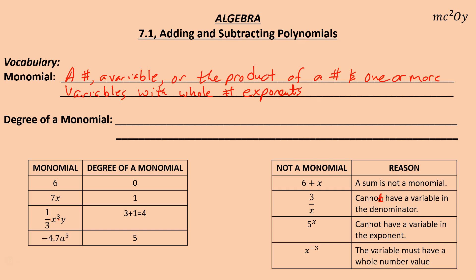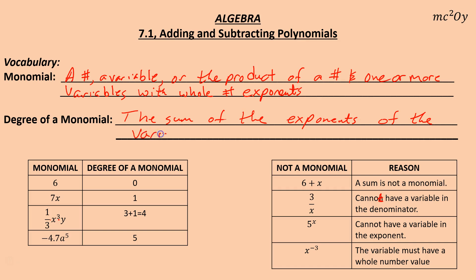The degree of a monomial is the sum of the exponents of the variables — exponents on numbers don't count, only on the variables. So for instance, there are no variables in six, so the degree is zero. We have an x — if you don't see an exponent, it means it's to the first, so that's degree one. We have a third degree and a first degree, so three plus one is four — it's a fourth degree. And if we have a fifth degree, it's five.